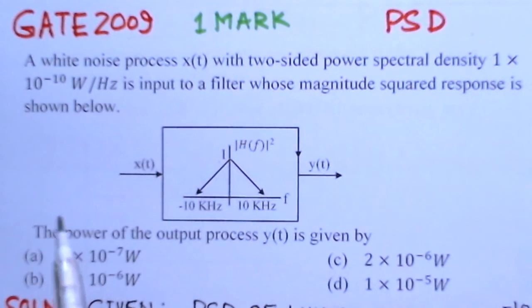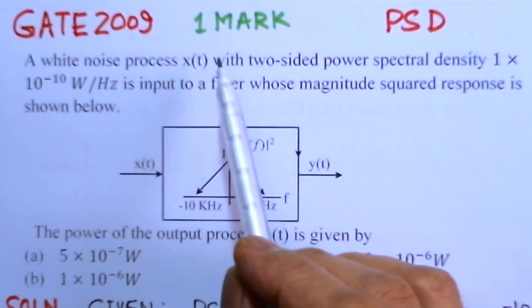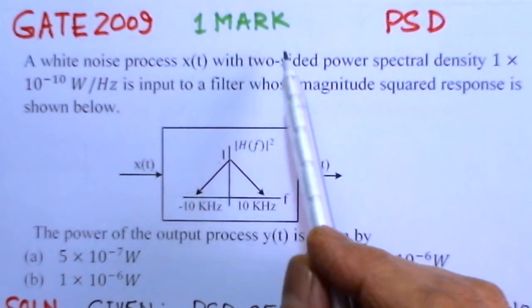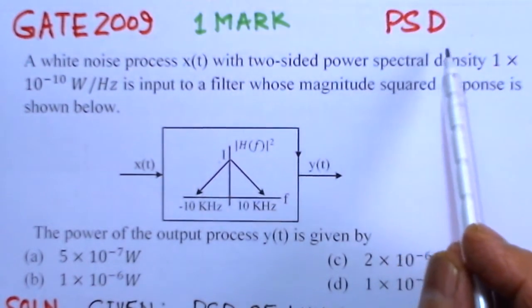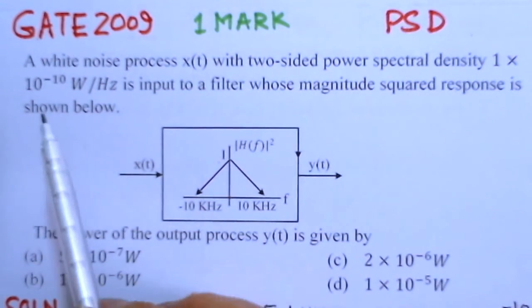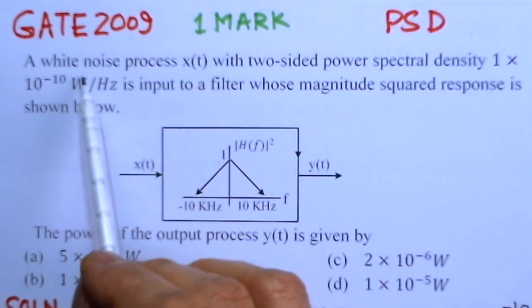The present GATE problem is from GATE 2009, it's a one mark question based on power spectral density. We'll read out the problem here and see its solution.